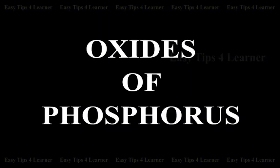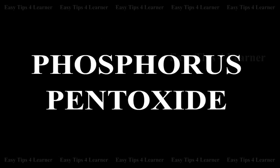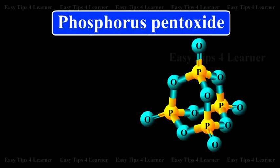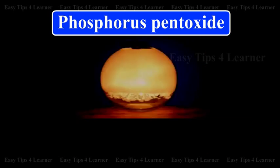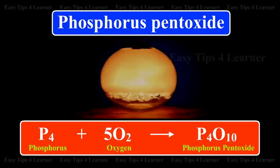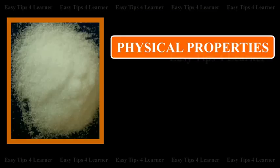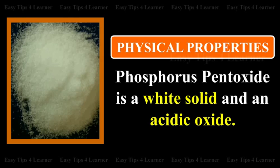Oxides of Phosphorus: Phosphorus pentoxide. Phosphorus pentoxide can be prepared by burning phosphorus with a sufficient supply of air. The reaction is: phosphorus plus oxygen gives phosphorus pentoxide. It is a white solid and an acidic oxide.